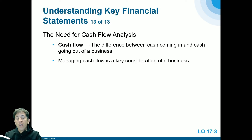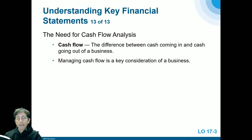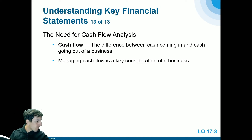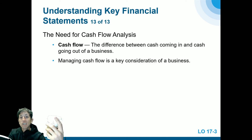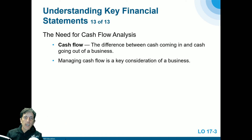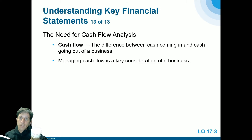Cash flow is the difference between cash coming in and cash going out. Sometimes you don't get paid upfront for expenses. For example, when Starbucks buys cups — probably a thousand at a time — the supplier usually gives them 30 days to pay. Many suppliers will provide you the product first, then send a bill, and ask you to pay within 30 days.